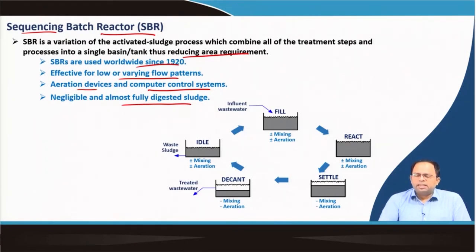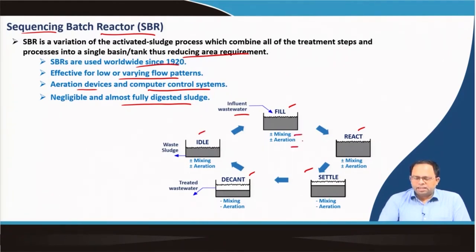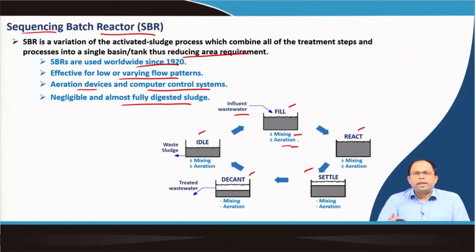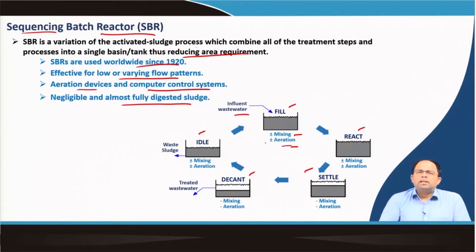In this image you can see the different stages or sequences. Incoming influent wastewater goes through: fill, then react, then settle, then decant, and then idle. The two basic processes are mixing and aeration — we mix the wastewater with the existing sludge which holds the bacteria, and aeration is the process of putting air into the chamber. In the activated sludge process we use both air and existing sludge to start the biological reactions.